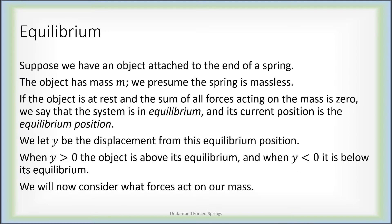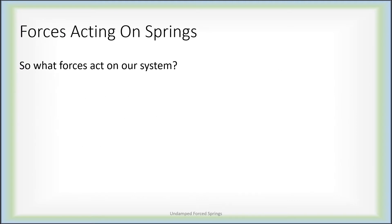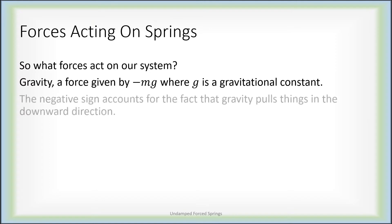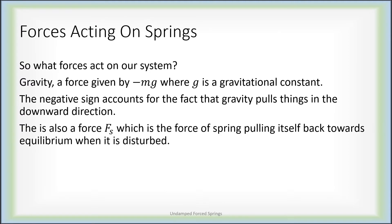Now we're going to consider what forces will be acting on our mass at the end of this spring. There's definitely gravity, a force given by negative mg where g is some constant. The negative sign accounts for the fact that gravity is pulling down, so negative mg represents the force pulling down. There's also a spring force F sub s. The spring wishes to return to equilibrium, so whichever direction you have pulled it away from equilibrium, F sub s pushes in the opposite direction.